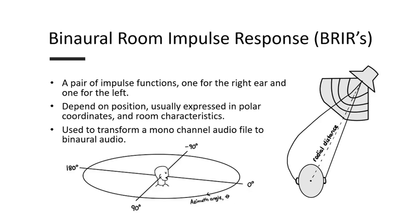One of those ways is by using B-R-I-Rs, or Binaural Room Impulse Responses. B-R-I-Rs are just a pair of impulse responses, one from a source position to the listener's left ear, and one from the source position to the listener's right ear. Thus, B-R-I-Rs depend on the location of the source relative to the listener and geometrical properties of the environment in which the impulse responses are recorded.